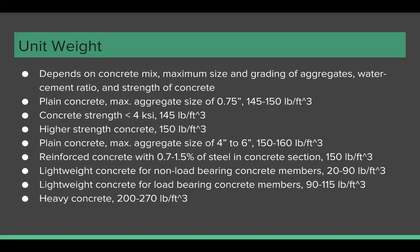For reinforced concrete with 0.7 to 1.5 percent of steel within the section, the unit weight can be taken as 150 pounds per cubic foot. And if the percentage of steel is higher, the weight may be taken as 155 pounds per cubic foot.